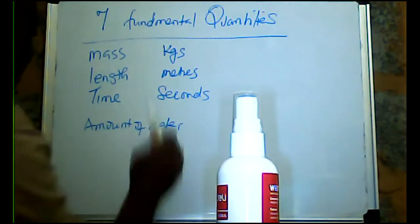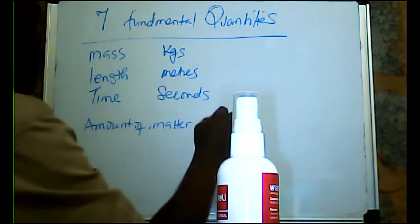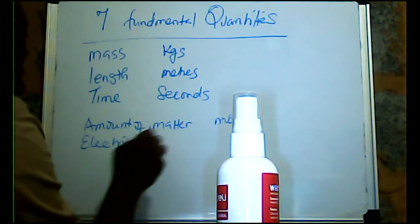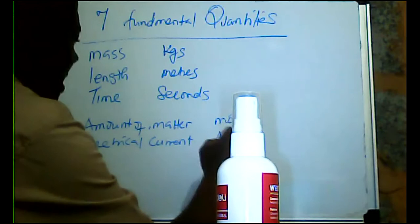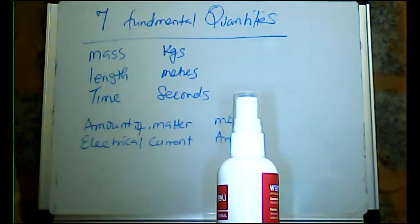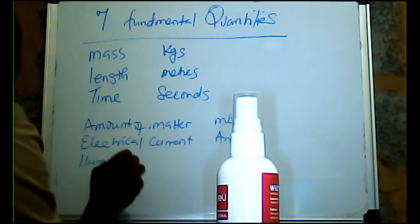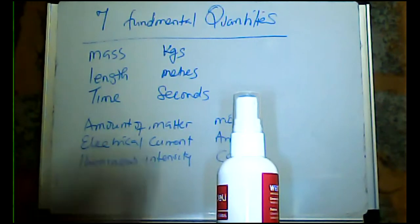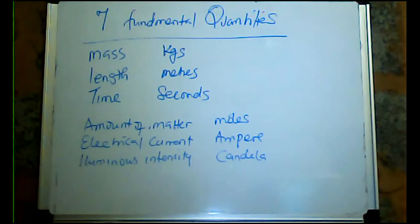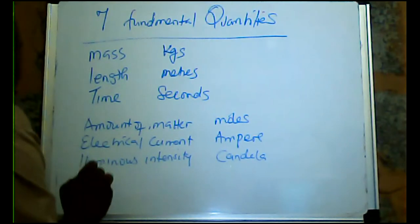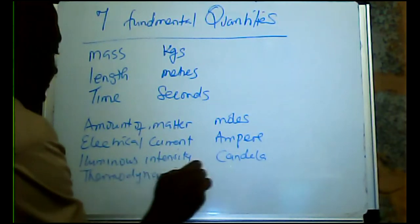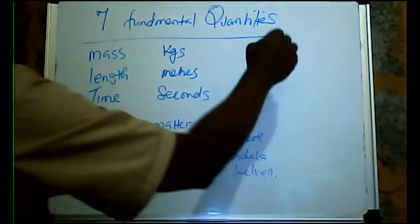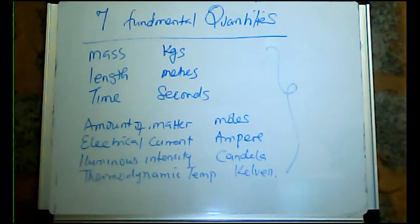Furthermore, we have amount of matter, measured in moles. We also have electrical current, measured in amperes. We also have luminous intensity, measured in candela. And then we also have thermodynamic temperature, measured in kelvin. These are the seven fundamental quantities.